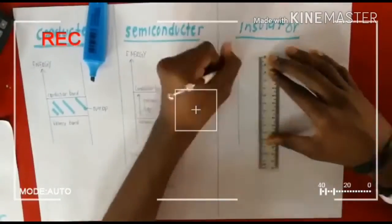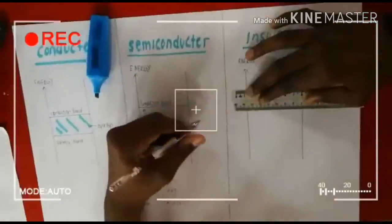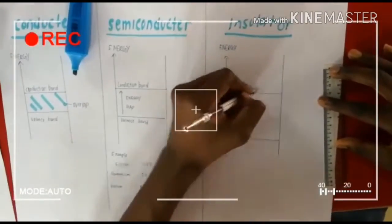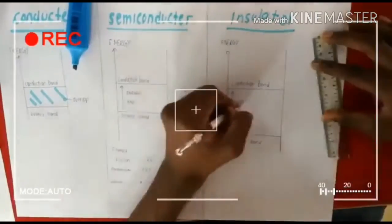In the case of insulators, the gap between the valence band and the conduction band is extremely large. In general, the energy gap is more than 3 electron volts and almost no electrons are available for conduction. Therefore, more energy has to be supplied to valence electrons.